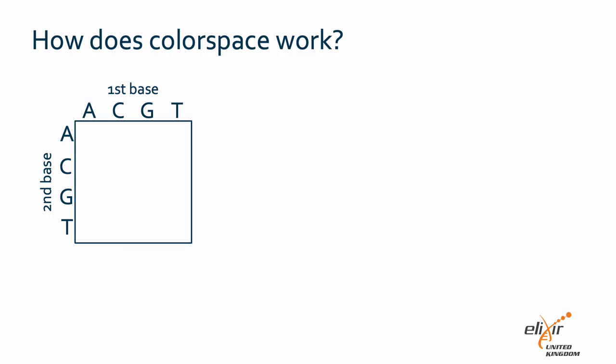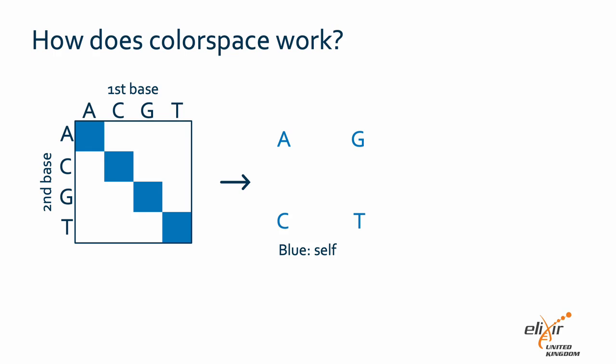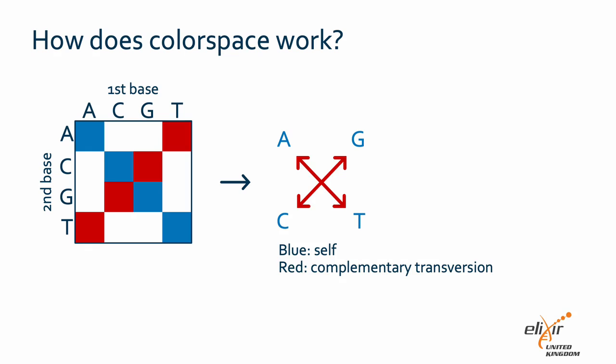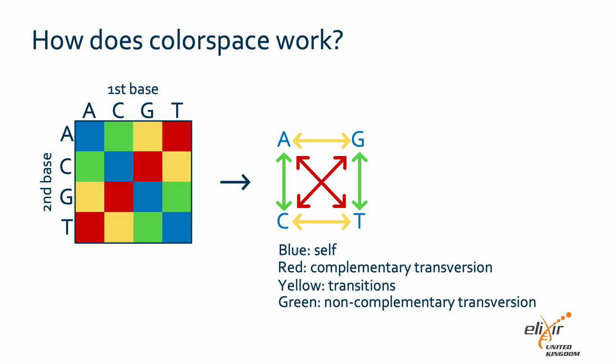Color space sequences are generated by reading bases in overlapping pairs using dye-based labeled probes. If a base is repeated, such as an A followed by an A, these are detected by blue fluorescing probes. If the second base is the reverse complement of the first, these are detected by red fluorescing probes. If both bases are purines, or both are pyrimidines, these are detected by yellow fluorescing probes. Finally, if base pairs represent non-complementary transversions, these are detected by green fluorescing probes.